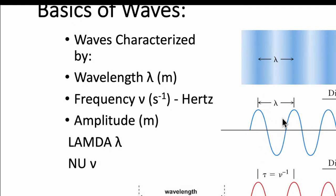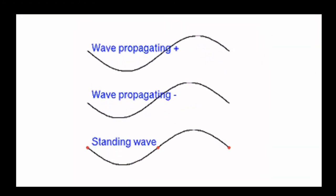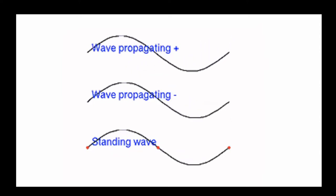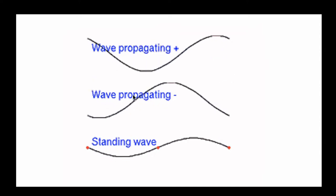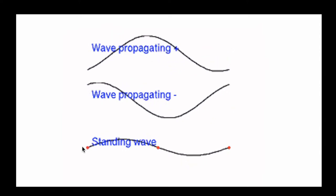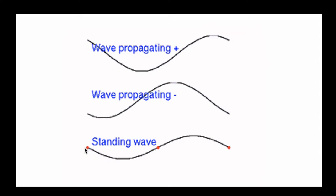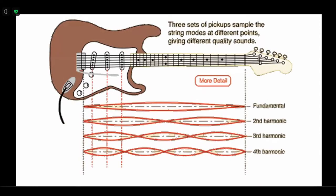Waves can also differ in phase. You can have a propagating wave that travels through space, or a standing wave where something is fixed at both ends — at nodes. An example of a standing wave is a guitar, and I have a guitar here.